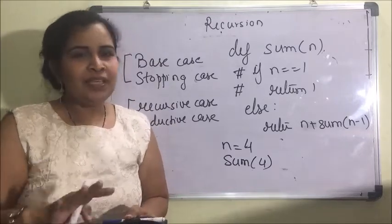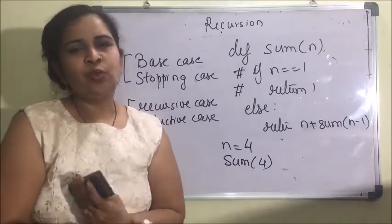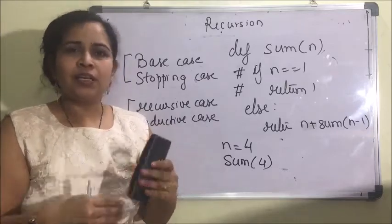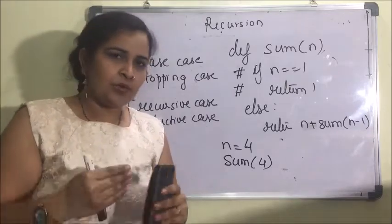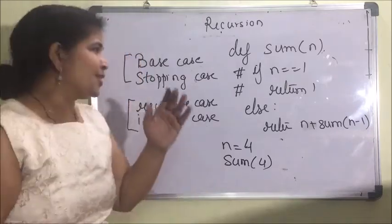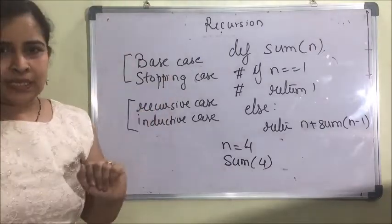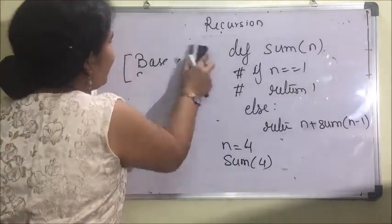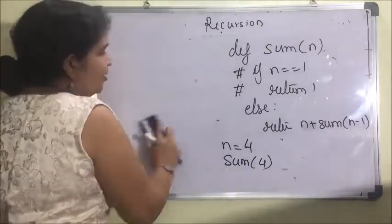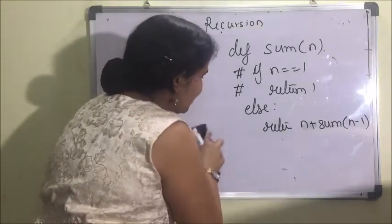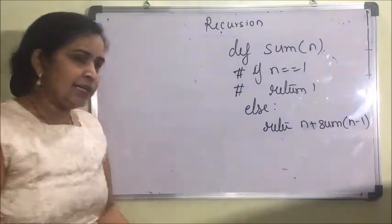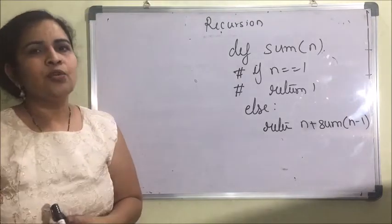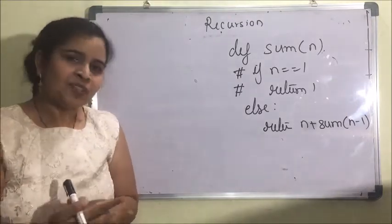It will keep on executing until the recursive depth limit is reached — when the memory is full — only then will it stop. So it is mandatory to have a base case. When using any recursive function, it is executed in the form of a stack.